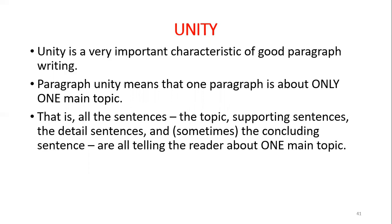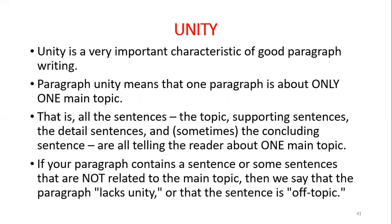For example, if you are talking about the advantages of living with your parents, you have to link all the sentences — the topic, the supporting sentences, the detailed sentences, and concluding sentences — all telling the reader about one main topic. You are talking about the advantages of living with your parents, so you only discuss the advantages; do not discuss the disadvantages. If your paragraph contains sentences that are not related to the main topic, then we say the paragraph lacks unity, or that the sentence is off topic.